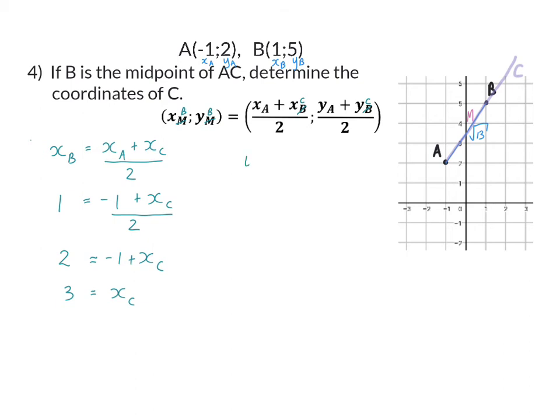And now we repeat the process for the Y coordinate. So we know that the Y coordinate of B is 5, and the Y coordinate of A is 2. We want the Y coordinate of C. Once again, I need to get rid of the divided by 2. So I'm going to multiply by 2 on the left to get 10. And then to get rid of the plus 2, we will subtract 2 on the left. So our Y coordinate is 8. And therefore, C's coordinate is (3, 8).